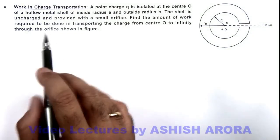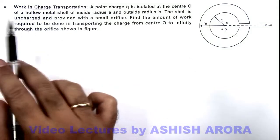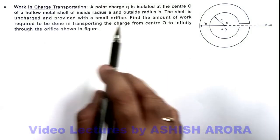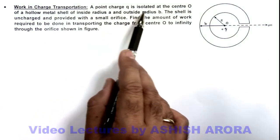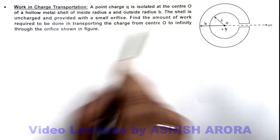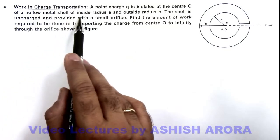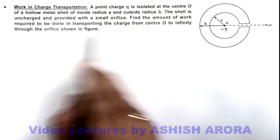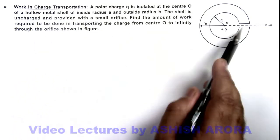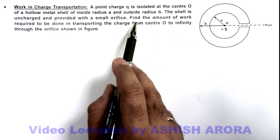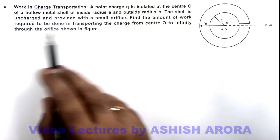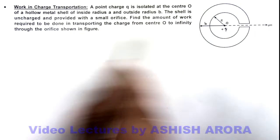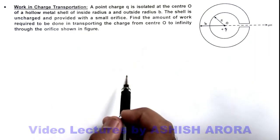Let's discuss another illustration to study work done in charge transportation. In this situation, we are given that a point charge q is located at the center O of a hollow metal shell of inside radius a and outside radius b. The shell is uncharged and provided with a small orifice. We are required to find the amount of work required to transport the charge from center O to infinity through the orifice shown in the figure.